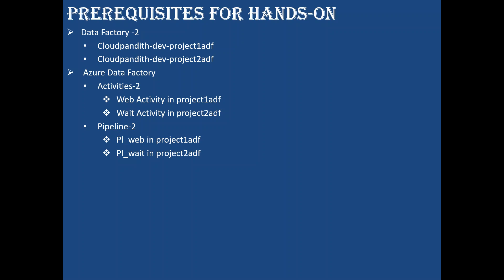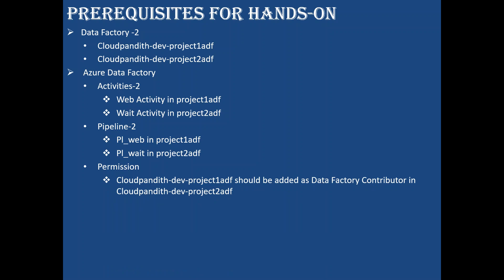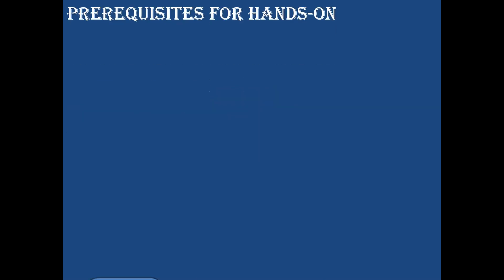Regarding permissions: if Project 1 ADF sends a request to run a pipeline in Project 2 ADF, Project 2 will simply ignore that request because it doesn't recognize Project 1. That's why we need to add Project 1 ADF as a contributor in Project 2 ADF. Let's see how to do that — there are a few steps to follow.